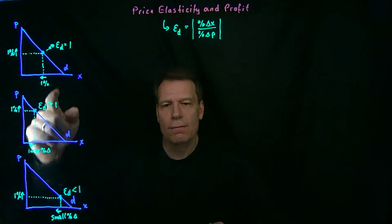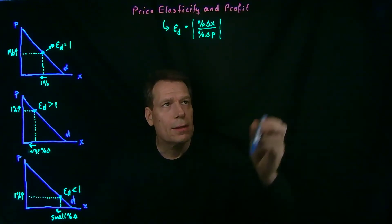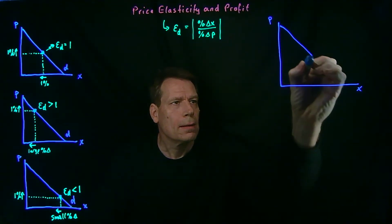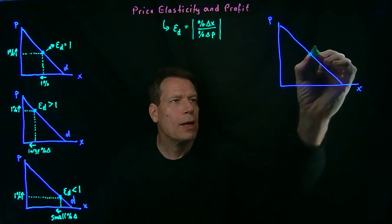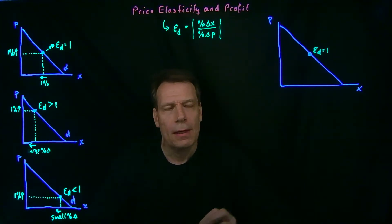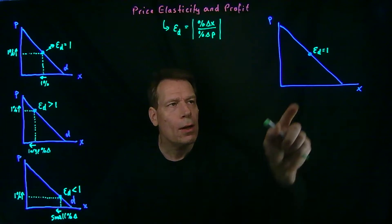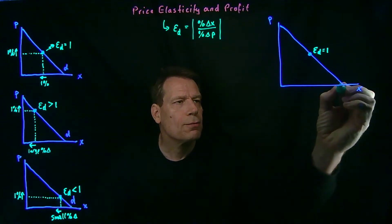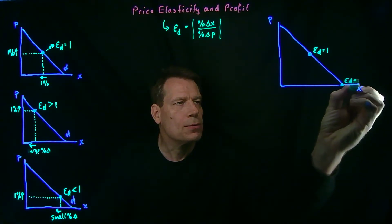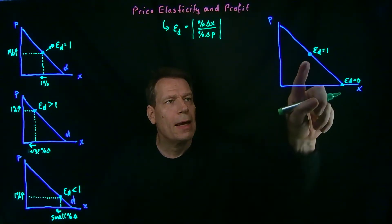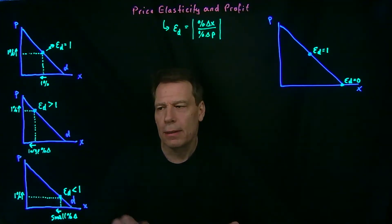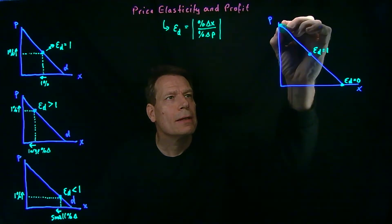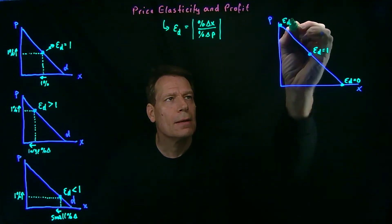So we can see that the elasticity of demand changes as we move along the demand curve. Let's redraw that demand curve and put in our midpoint. At that midpoint, price elasticity of demand equals 1. It's less than 1 below and greater than 1 above. As we move down the demand curve from the midpoint, the elasticity falls — using a little calculus, we can show it falls all the way to 0 where the demand curve crosses the horizontal axis. As we move up from the midpoint, elasticity increases, approaching infinity as we approach the vertical axis.